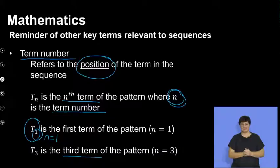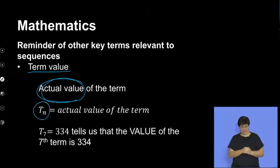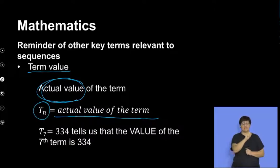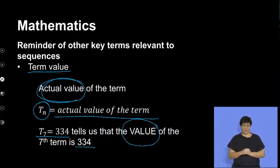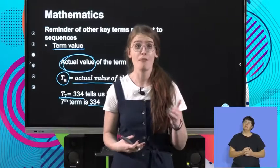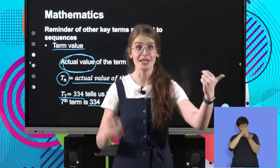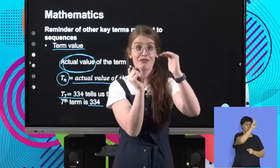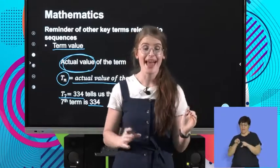Let's have a look at the next definition. The next one is term value, and that refers to the actual value of the term. So we're going to have TN equal to a specific number. If I say that T7 is equal to 334, that means that the value of the seventh term is 334. The term value and the term number are different to each other. If I say the fifth term of a pattern is 100, T5 is my term position, and 100 is the actual value of the term. So T5 is the term number, and 100 is the term value. Please make sure you know the difference between term number and term value.